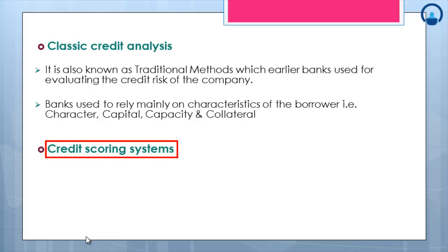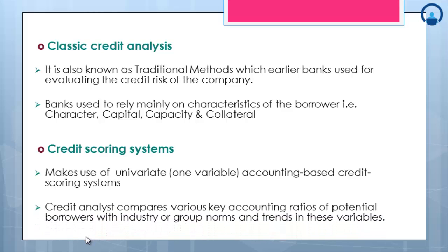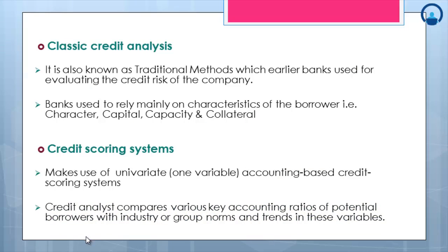The next is the credit scoring system, which is a newer concept. In recent decades, a number of objective, quantitative systems for scoring credits have been developed. In univariate, i.e., one-variable, accounting-based credit scoring systems, the credit analyst compares various key accounting ratios of potential borrowers with industry or group norms and trends in these variables. Today, Standard and Poor's, Moody's, and the Risk Management Association can all provide banks with industry ratios.